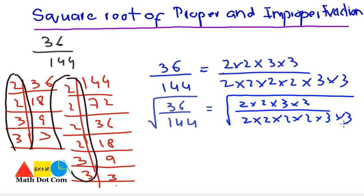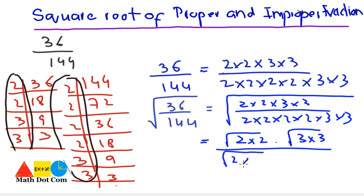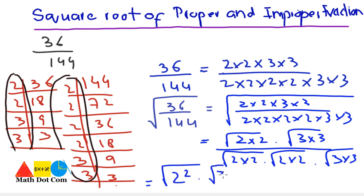In step 3, we make pairs. Under the square root: (2 × 2) is one pair, (3 × 3) is another pair in the numerator. In the denominator: (2 × 2) is one pair, (2 × 2) is another pair, and (3 × 3) is a pair. We then write this in exponential form as √(2²) · √(3²) over √(2²) · √(2²) · √(3²).